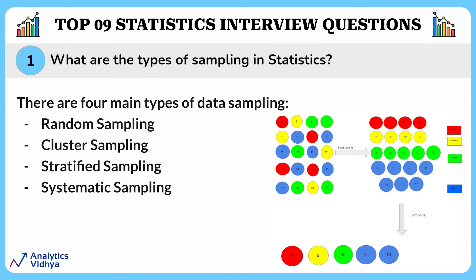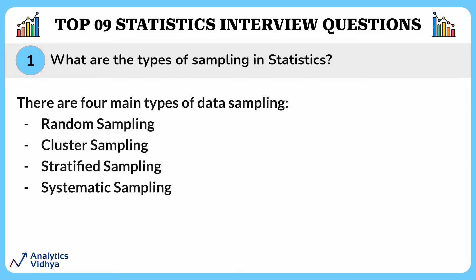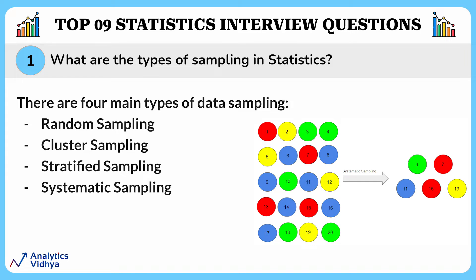Next is stratified sampling. In stratified sampling, we divide the population into subgroups called strata based on different traits like gender, category, etc., and then we select the sample from these subgroups. Finally, we have systematic sampling, where the first individual is selected randomly and others are selected using a fixed sampling interval.